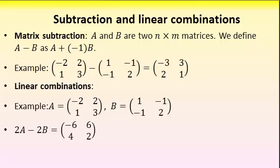For example, 2A minus 2B. That's a linear combination of A and B resulting in this matrix. So just keep in mind when you do this kind of linear combination of matrices, you simply do that linear combination element by element.